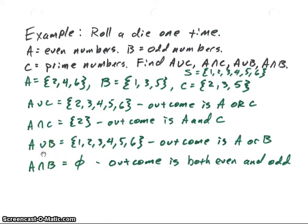A union B is, in this case, it's going to be both even numbers and odd numbers, and therefore, all of them, one through six. So that means those are the outcomes that will be either an even or odd number. And of course, that would be all of them.